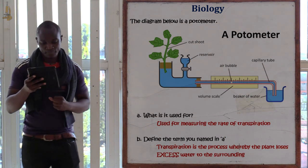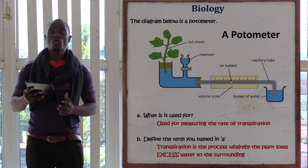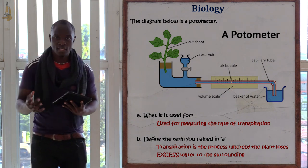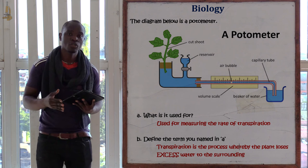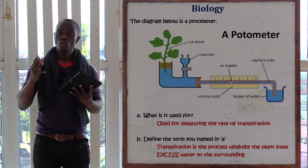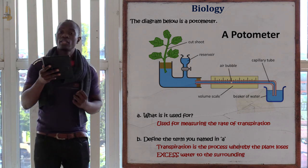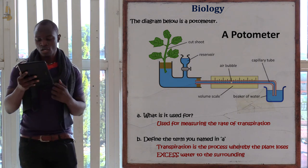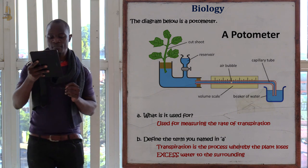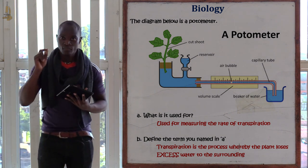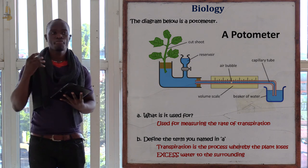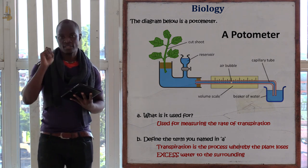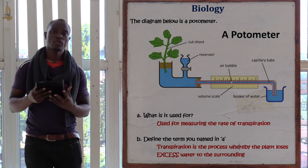A potometer is an apparatus used to measure the rate of transpiration of a given area. Transpiration is the process whereby plants lose excess water to the surrounding — you must say 'excess water.'